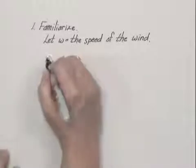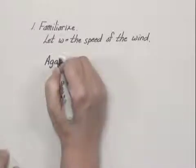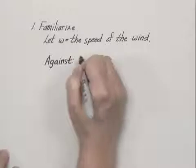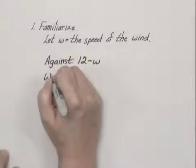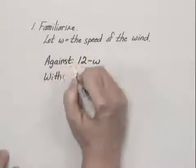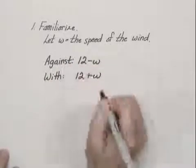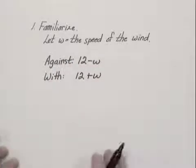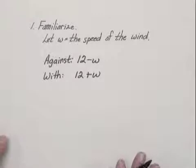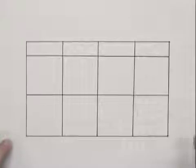The speed against the wind, then, will be 12 minus w, and the speed with the wind would be 12 plus w. Whenever we have a motion situation, we should organize our information in a table.